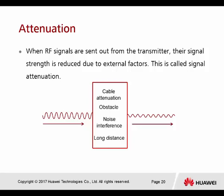Attenuation: when radio frequency signals are sent from the transmitter, their signal strength is reduced due to external factors. Attenuation is caused by several things: first, cable length — the longer the cable, the greater the loss. Second, obstacles blocking the path between transmitter and receiver. Third, noise interference from other wireless devices like Bluetooth, infrared, and cell phones. Fourth, long distance — the farther you are from the access point, the more attenuation occurs.